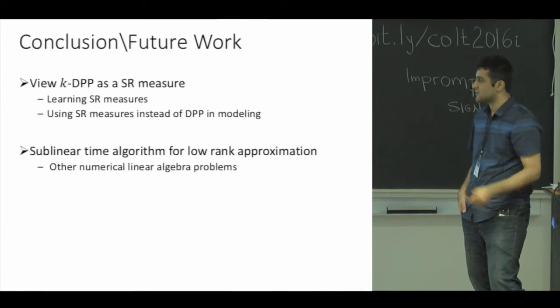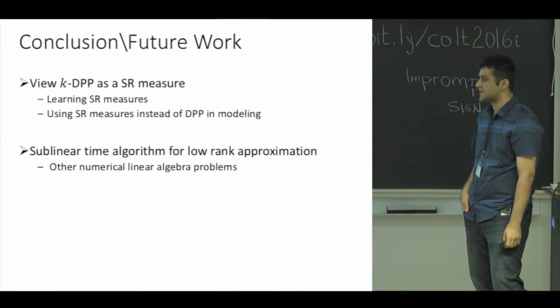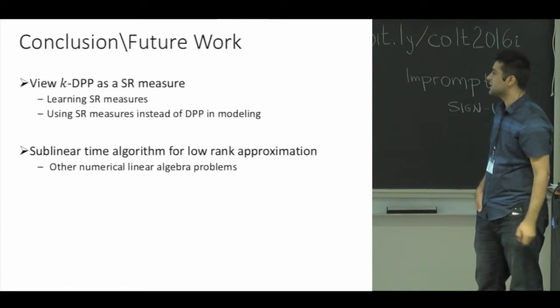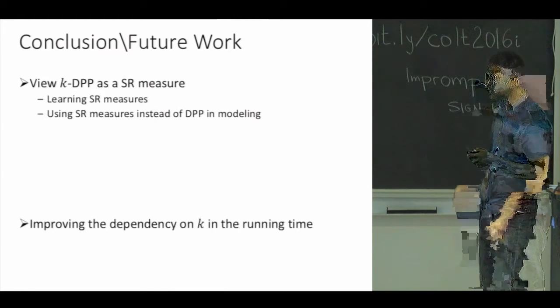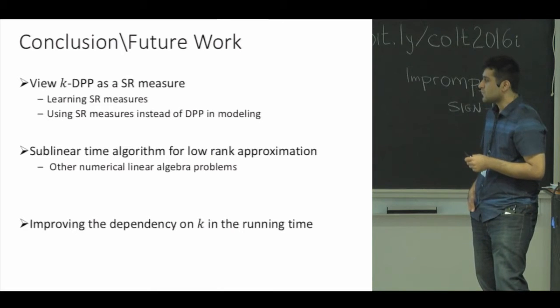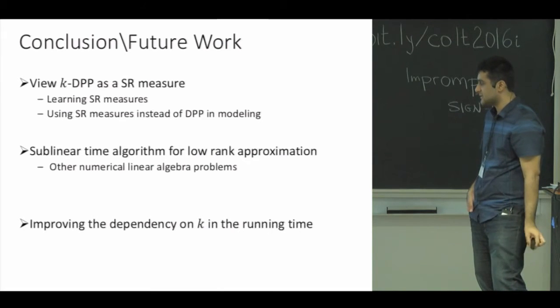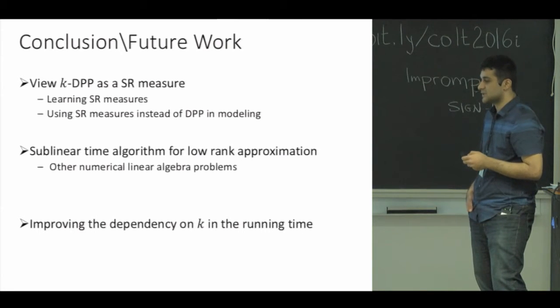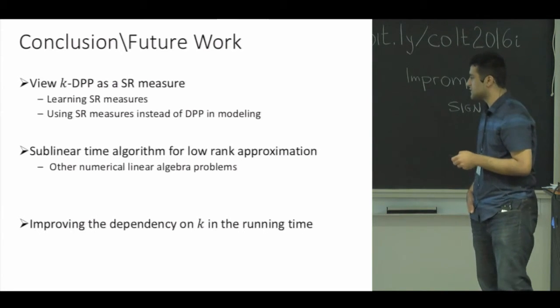We provided some linear time algorithm for some version of the low-rank approximation problem, provided some extra information in the input. Another interesting question is, can we also design sublinear time algorithms for other numerical linear algebra problems given some extra reasonable information in the input? Finally, although the running time of our method is nearly linear in n, the dependency on k doesn't seem very efficient, so it would be nice to improve the running time. I can stop here, thank you.